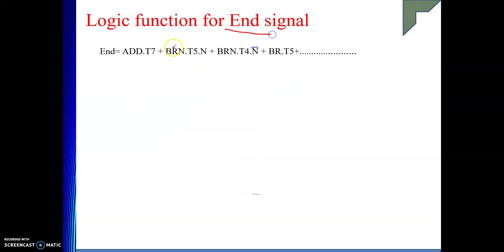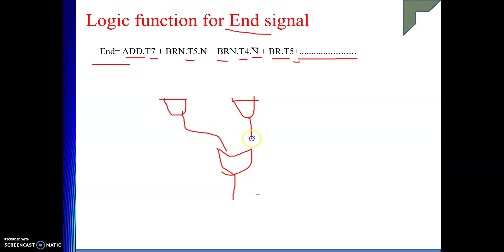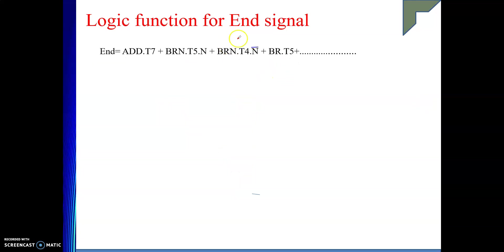Similarly, you can do it for the AND signal also. The AND signal was appearing in your ADD instruction at step number seven, branch on negative at step number five, branch on negative step number four when the AND flag value is zero, and for your jump instruction — branch means jump instruction — in step number five, as well as in many more instructions. So here we have written it as a dotted line. This is the logic function for AND signal. If you need to draw the circuit, you will apply some AND gates whose outputs are connected to an OR gate, and that will generate the AND signal.